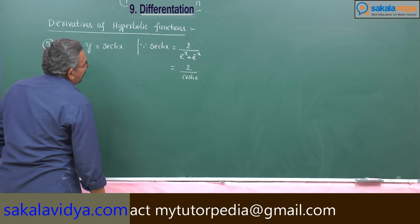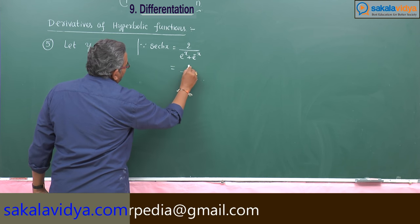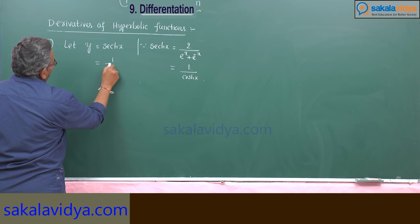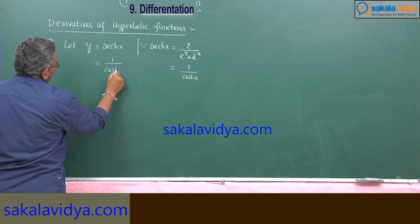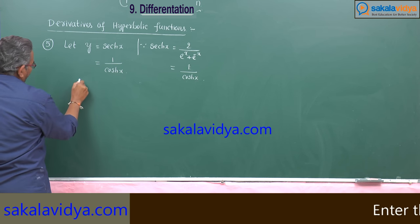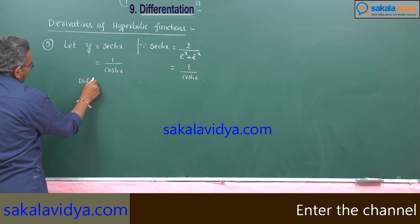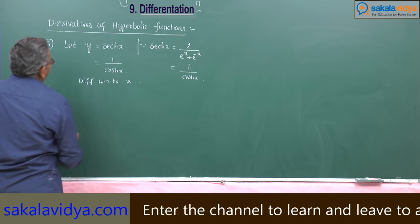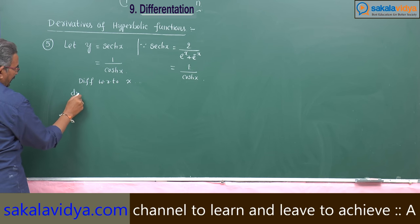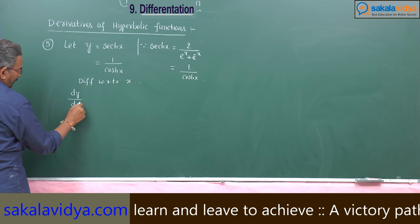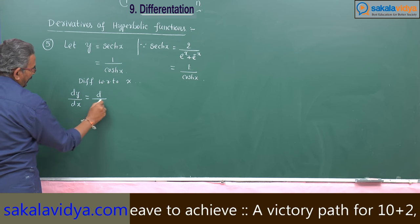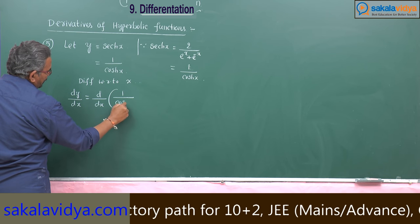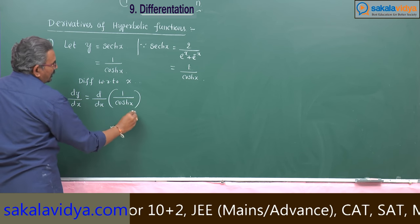This is 1 by cosh x — we can write it as 1 by cosh x. Now differentiate with respect to x. So dy by dx is equal to d by dx of 1 by cosh x.